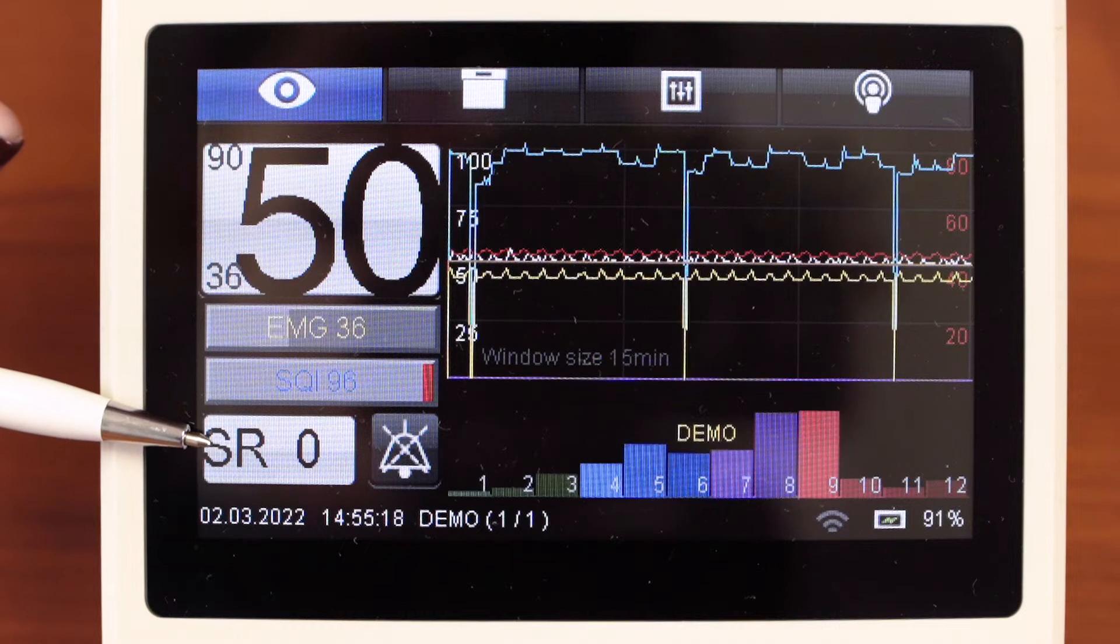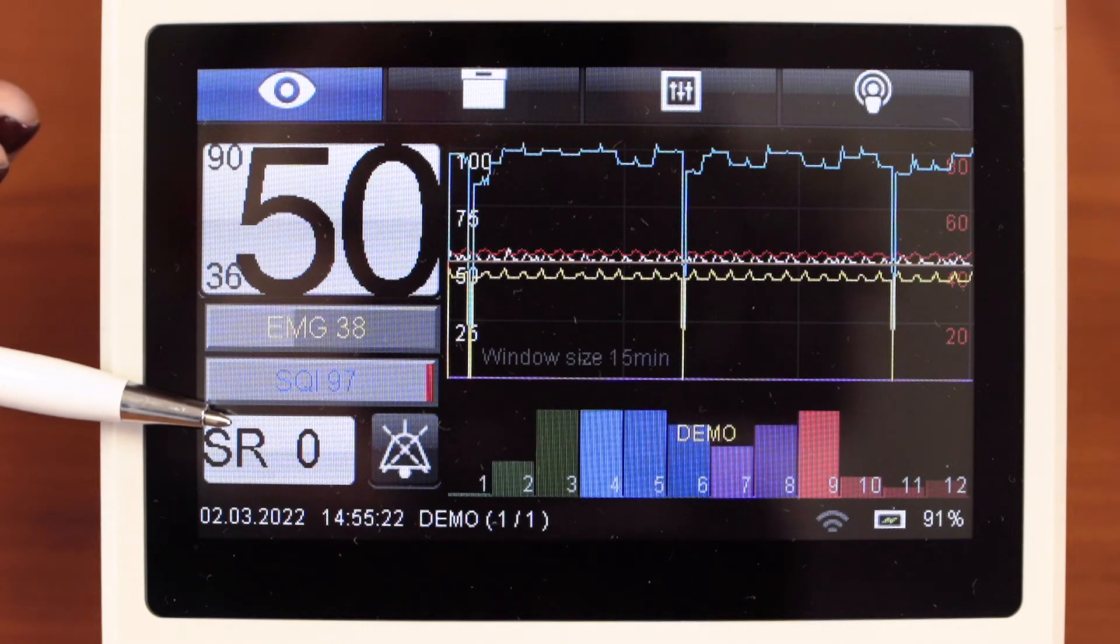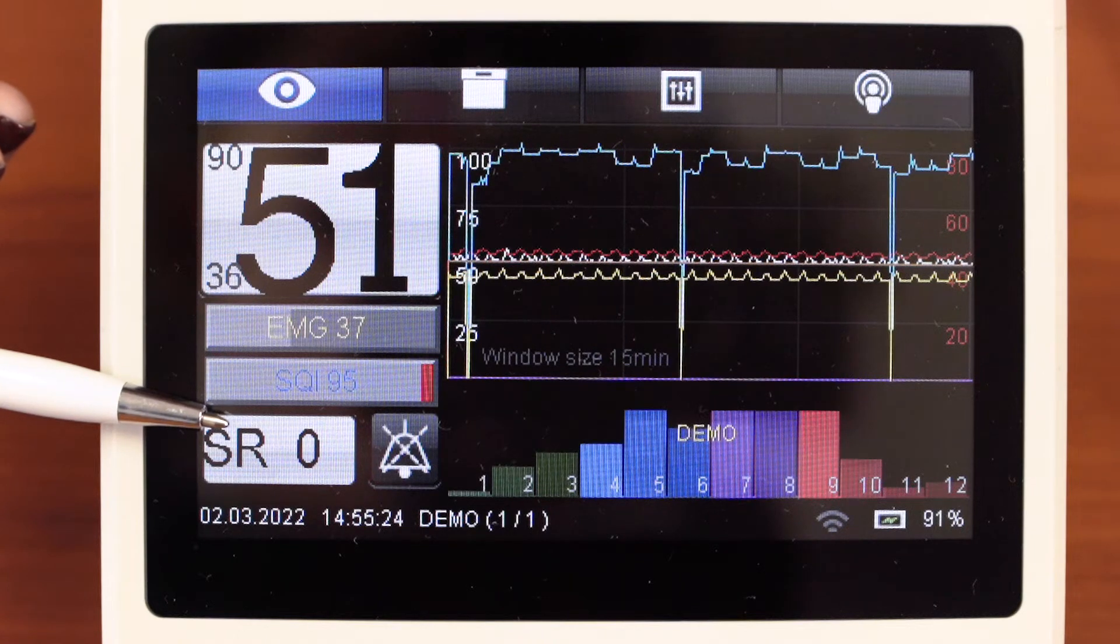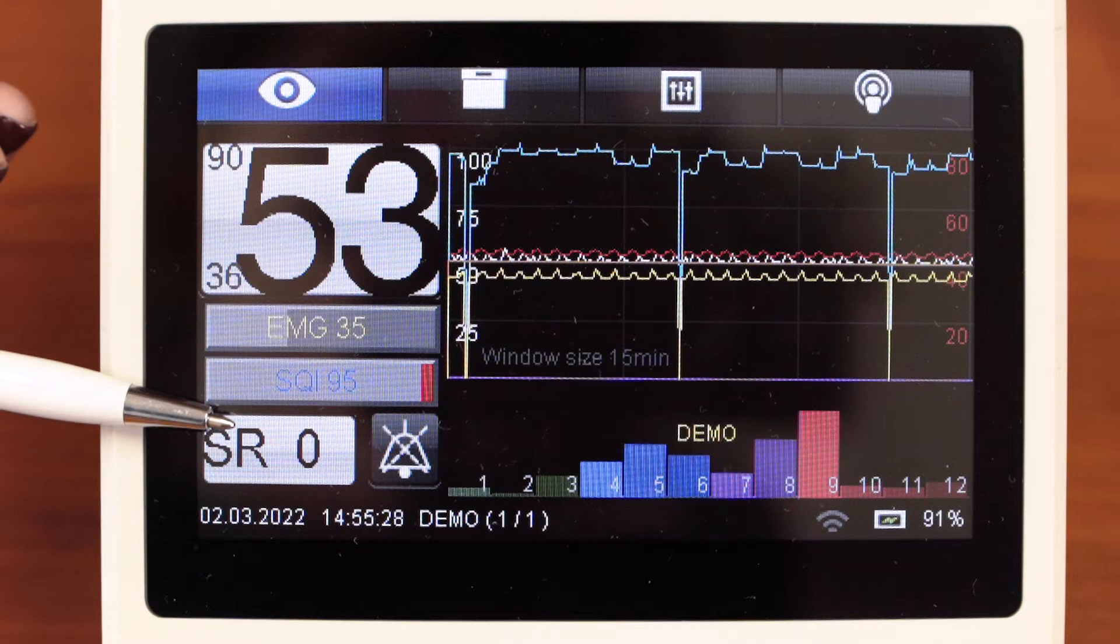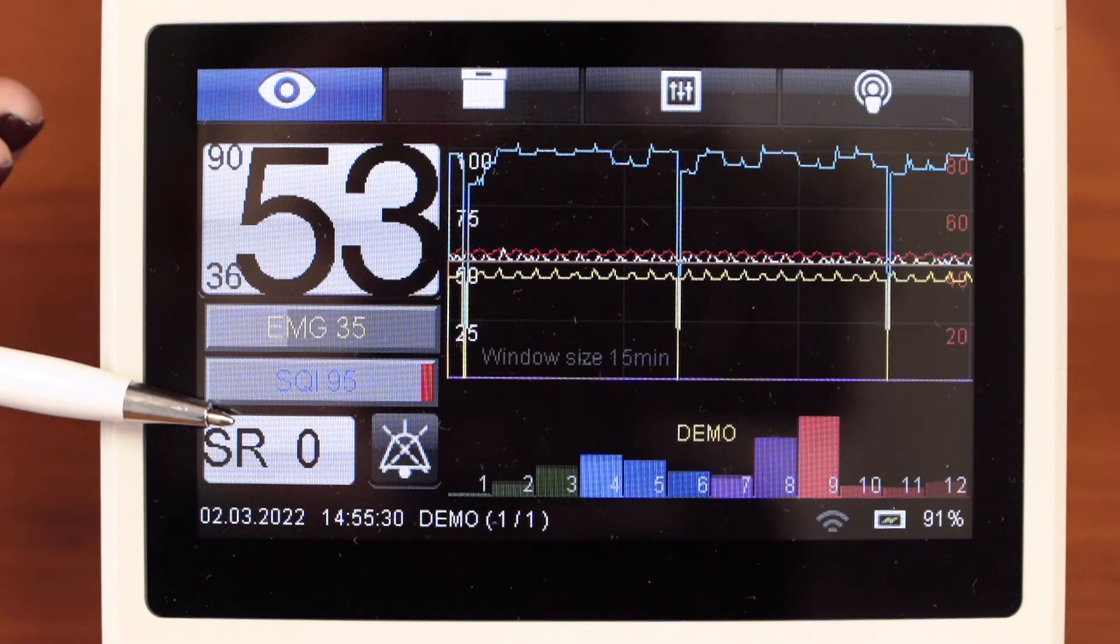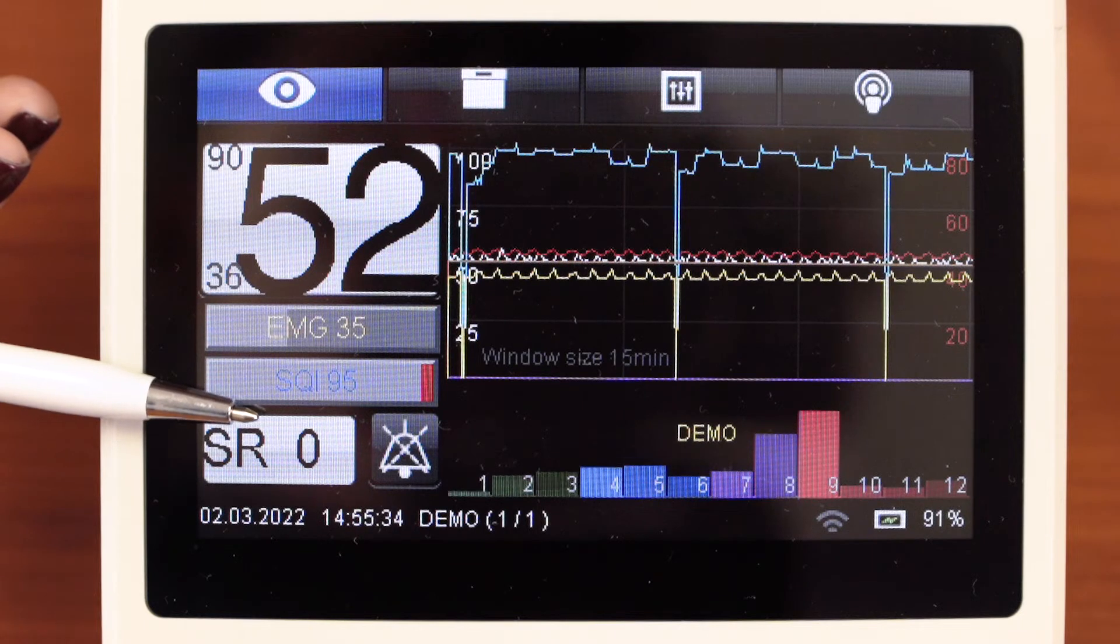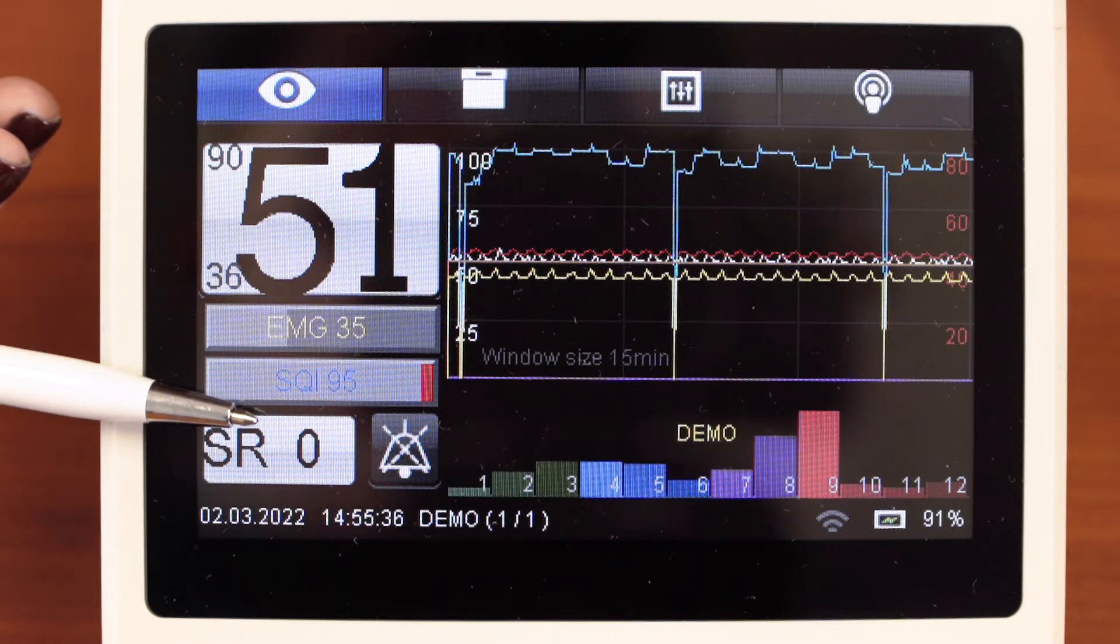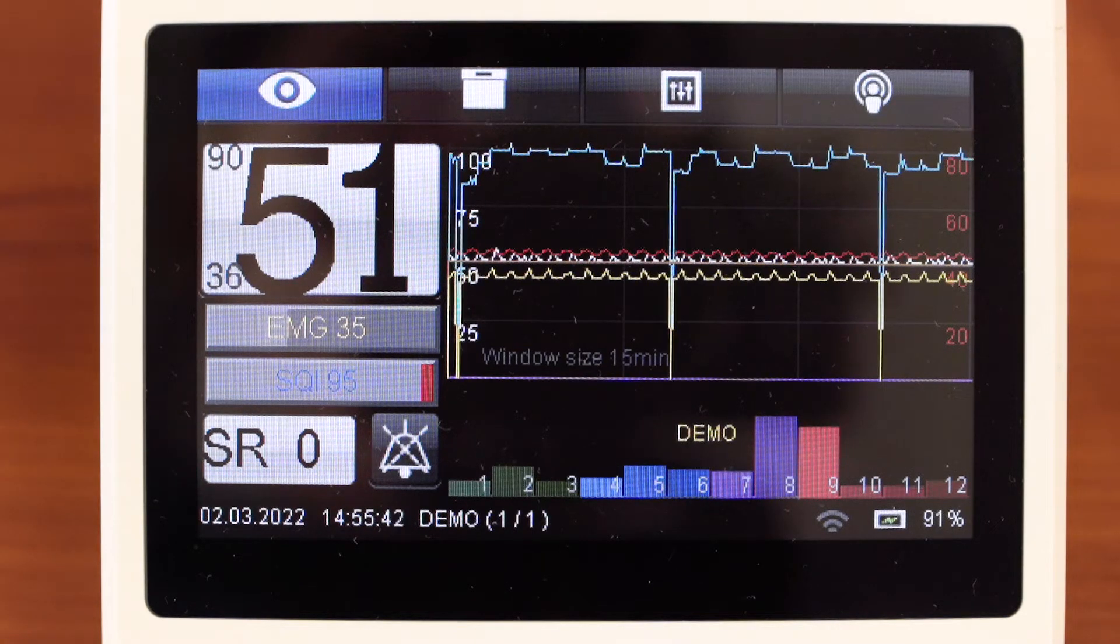Suppression rate is 0. It means normal EEG signal. If suppression rate more than 0, it means there are suppression parts close to isoelectric line on EEG signal. Suppression rate expresses in percent the total time of suppression EEG fragments for the last minute of measurements. Physicians have to follow the dynamics of changes of all values.